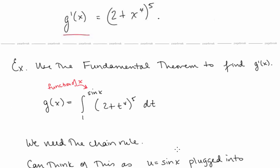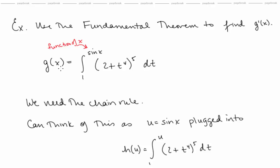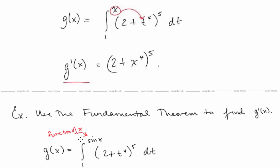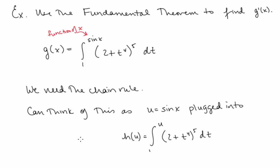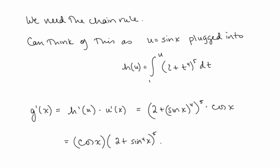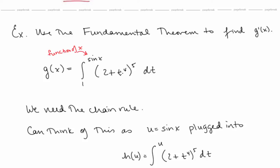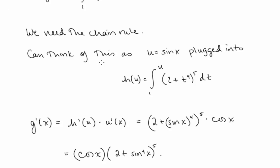Now consider g(x) = ∫₁^(sin x) (2 + t⁴)⁵ dt. Instead of just x as the upper bound, we now have a function of x. We need the chain rule — this is a composition. Let u = sin(x) plugged into h(u). The derivative is h′(u)·u′(x), giving us (2 + sin⁴x)⁵ · cos(x). We plug sin(x) in for t and then multiply by its derivative, cos(x).